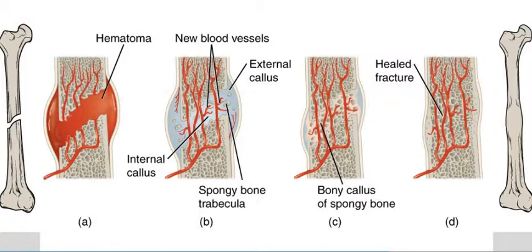The external callus will get smaller but will not completely go away. The spongy bone is going to rearrange itself and rebuild the bone as it's supposed to be. At the edges next to the external callus, the bone starts to form into the compact bone wall of the diaphysis, and eventually everything gets back to basically how it was. Connective tissue when injured tends to grow back a little bit stronger, laying down more collagen fibers — that's what we call a scar. Bones have scars too, where the bone matrix is a little denser, and you can see that on an x-ray.